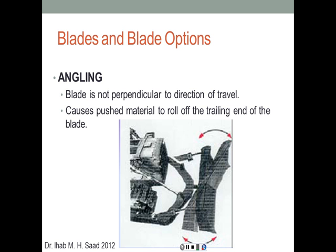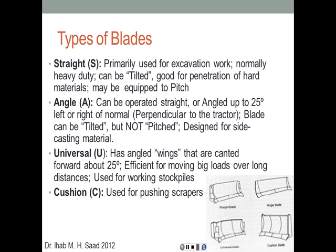The third motion is angling — the blade rotates so that if the dozer is moving forward and you want to push soil aside, you angle the blade to push soil sideways, creating a clear path in front. The blade is not perpendicular to the direction of travel, causing material to roll off the trailing end of the blade. Some blades can perform all three motions; others are limited to tilting only, or tilting and pitching, or pitching and angling, or all three.